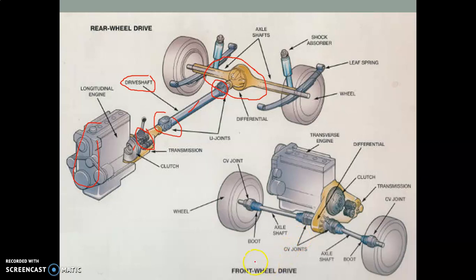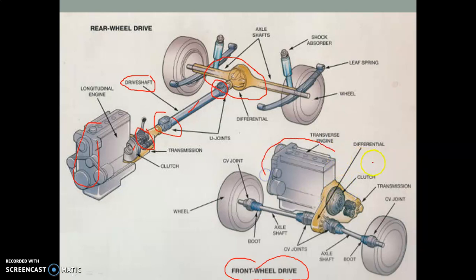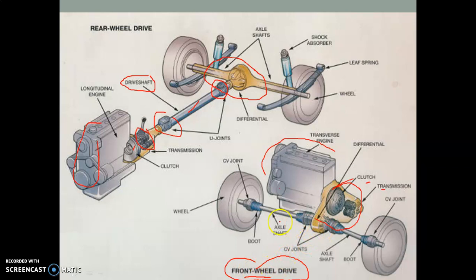In the second picture, front wheel drive is represented. The difference between rear wheel and front wheel drive is that in front wheel drive, the engine along with the differential gearbox and the clutch transmission system are all on the front axle. In rear wheel drive, the differential is on the rear axle, whereas in front wheel drive, the differential gearbox is on the front axle — that is why it is called front wheel drive.